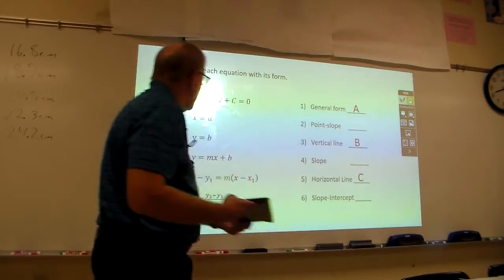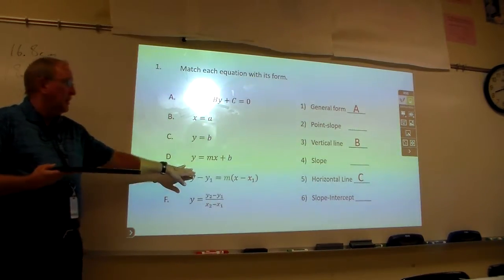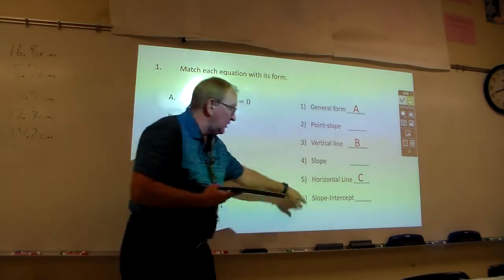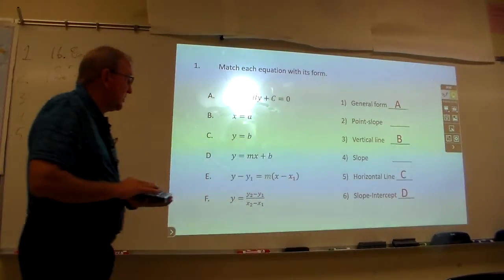So, what is Y equals MX plus B? Slope intercept. It is slope intercept. Look, it has a slope and a what? Y intercept. That's why we know it's the slope intercept form.